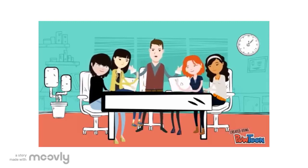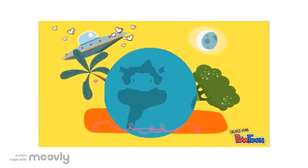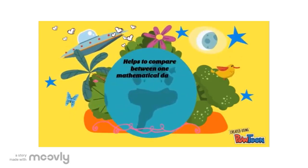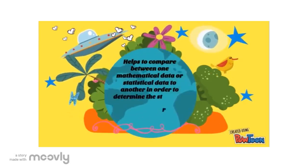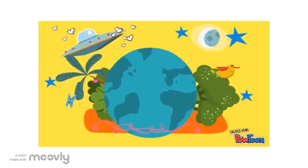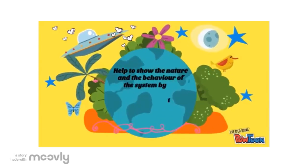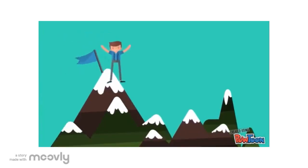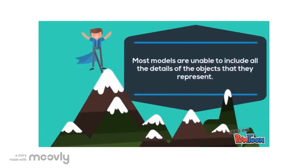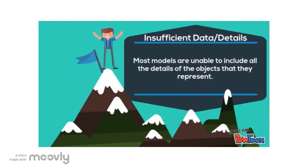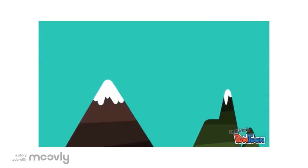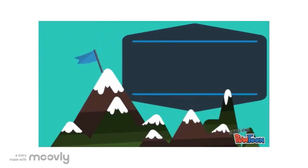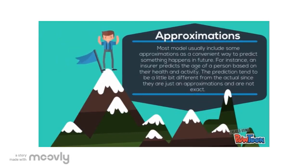Can you explain about the benefits and limitations of modeling? Well, one of the benefits is it helps to compare between our mathematical or statistical data to another in order to determine the strengths or weaknesses, which determines whether the data is significant or not. Another benefit is that it helps to show the nature and behavior of a system by numerical or quantitative value, which excludes emotional judgment of humans. On the other hand, limitations include insufficient details, because most models are unable to include all the details of the objects they represent. Besides that, approximation is also a limitation since models include approximation for convenience, and the outcome might not reflect exactly in reality.